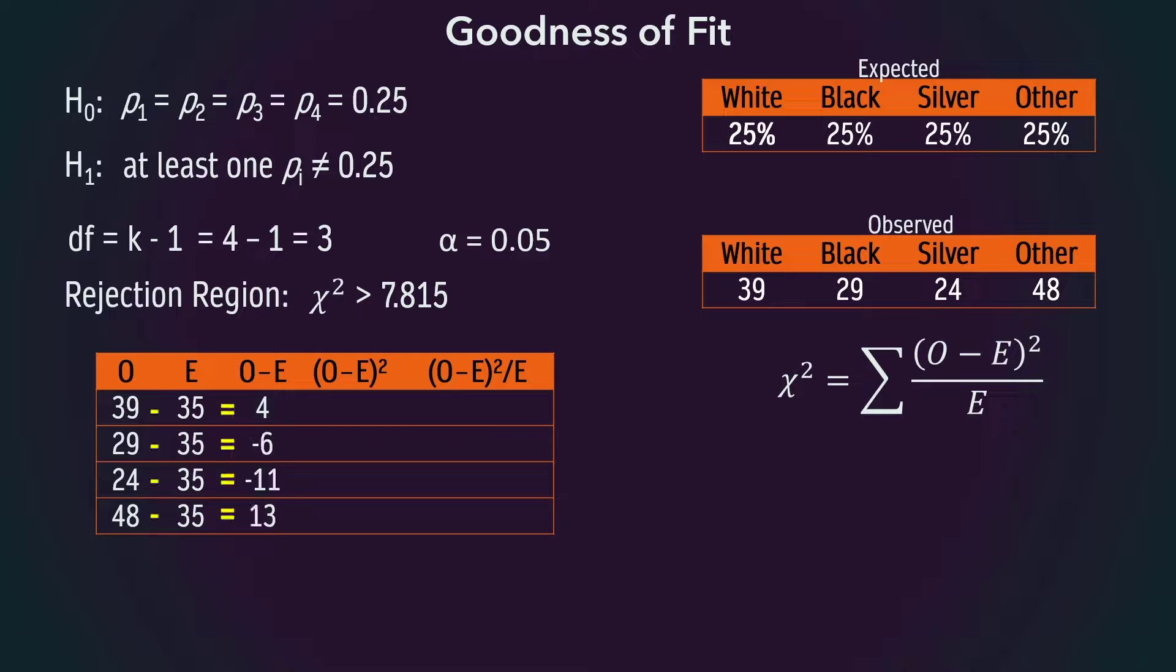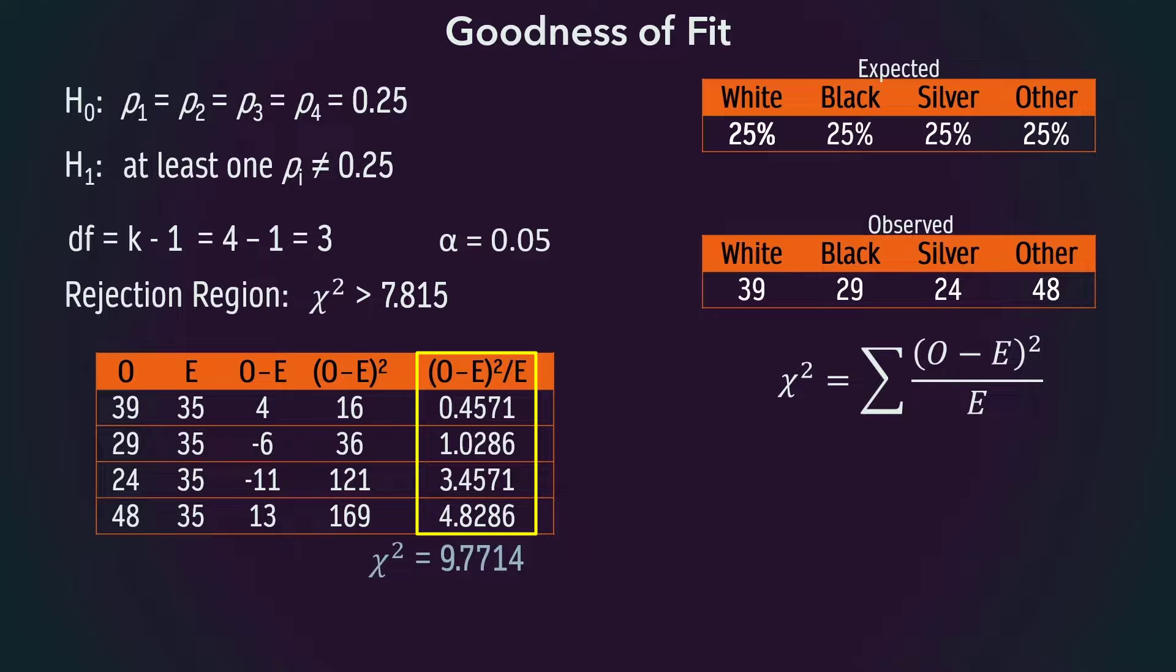Next, we take the differences, square them, divide by the expected, and sum them to obtain the chi-square statistic of 9.7714.